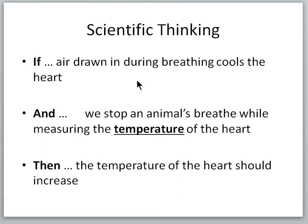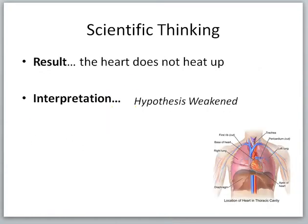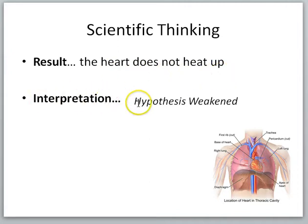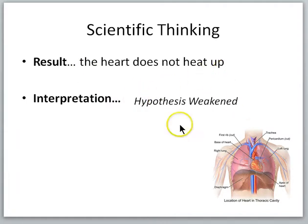The experiment and prediction should mention what we are measuring. The resultant interpretation was clear: the heart does not heat up. And so our interpretation is that the hypothesis is weakened. Because the result does not match the prediction, we say the hypothesis is weakened.